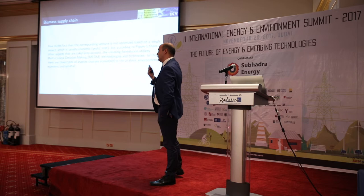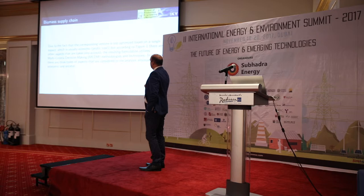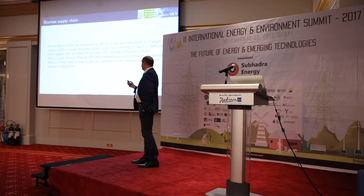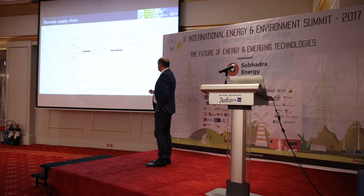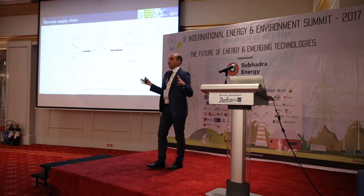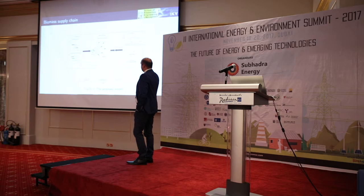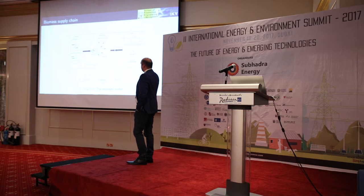Regarding the biomass supply chain, we have examined three types of major aspects: economic, social, and environmental criteria. If we try to decompose the biomass supply chain, then we have the production, warehousing, and demand satisfaction under the three aspects — economic, environmental, and social — which are the goals of our model.